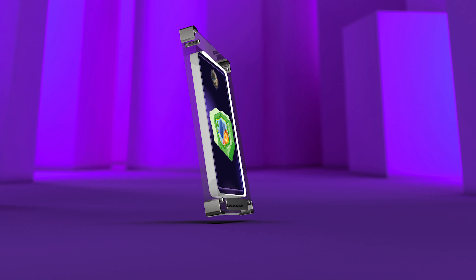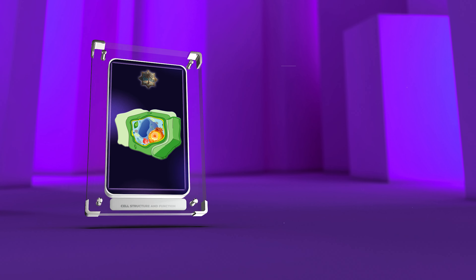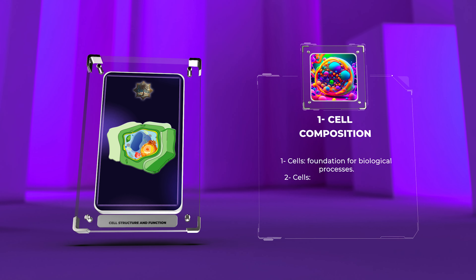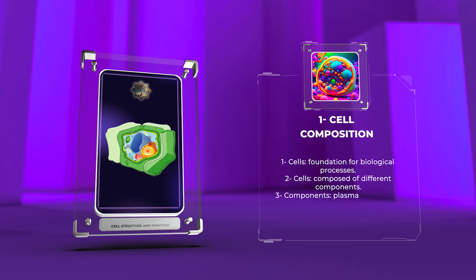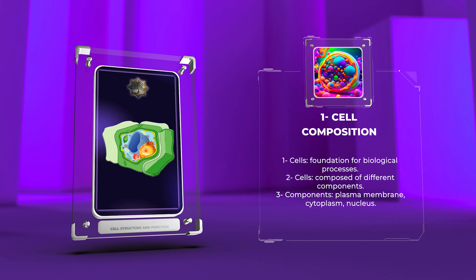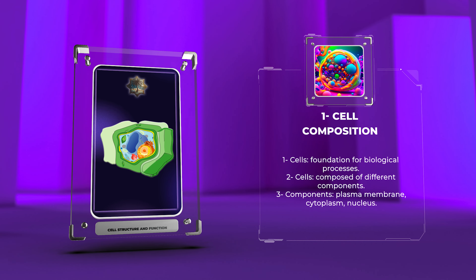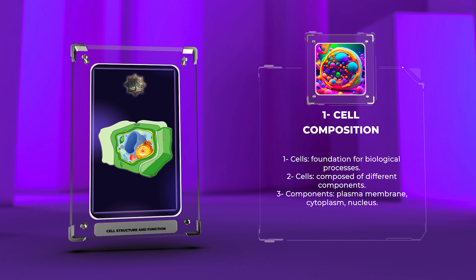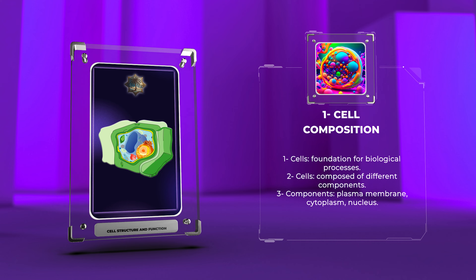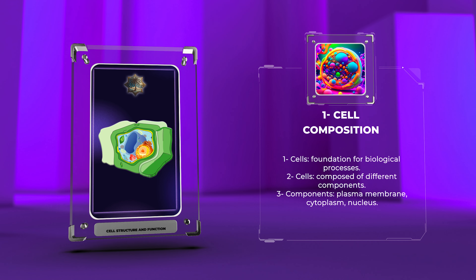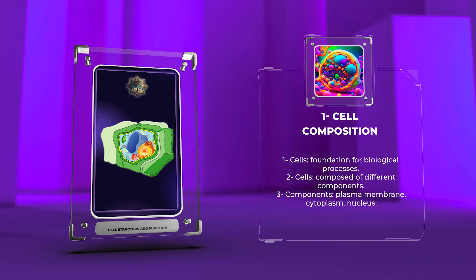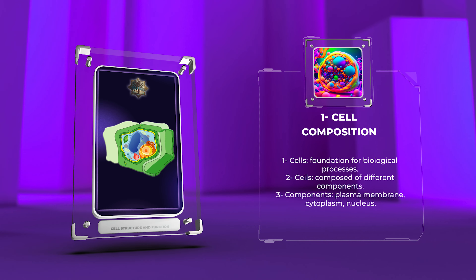The cellular composition represents the foundation upon which biological processes occur. Cells are composed of different components, each playing a crucial role in maintaining cell integrity and functionality. At the most basic level, cells consist of three main parts: the plasma membrane, the cytoplasm, and the nucleus.